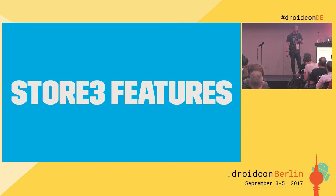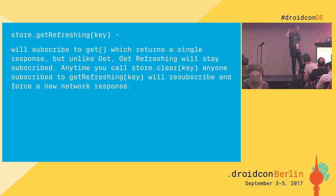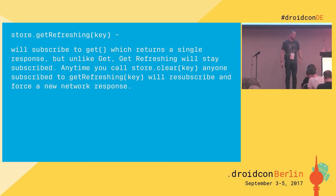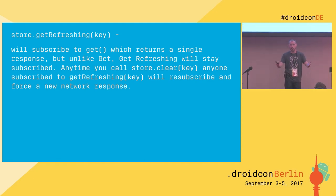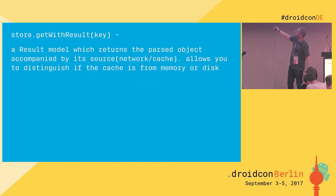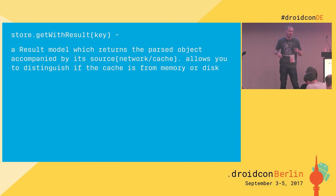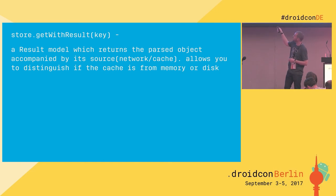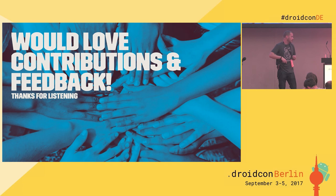Some newer features in Store version three: 'getRefreshingKey' — when you do a get, you get data once, but this lets you get data and listen for any updates, staying subscribed. Any time you call store clear, subscribers resubscribe and get the new network response. 'GetWithResult' lets you get your data and also know where it came from — memory or disk — encapsulating result state with the data.